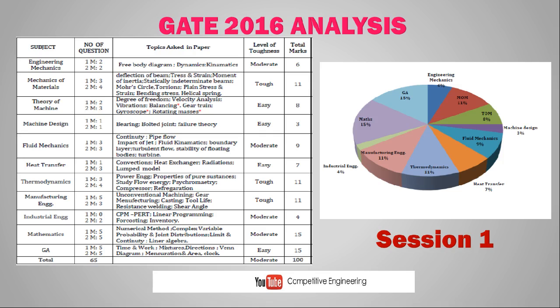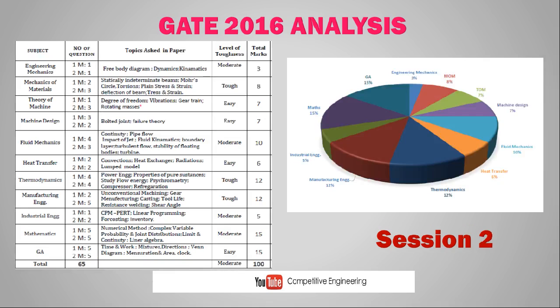Now moving to GATE 2016 Session 2 analysis. The topics are nearly the same since the core areas in each GATE examination are consistent. If you study all these topics well, you can achieve a very good rank. Checking the mark distribution: thermodynamics 12 marks, manufacturing engineering 12 marks, fluid mechanics 10 marks, and mechanics of machines 8 marks. The difficulty level was moderate.